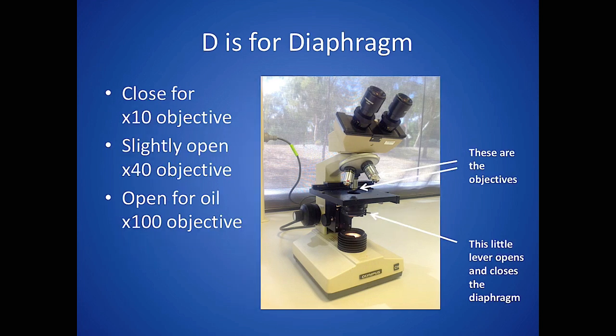D is for diaphragm. Look very carefully at the condenser unit and you can see a tiny lever that can slide to an open and closed position for the diaphragm inside the condenser. When starting off with a 10x objective, have the diaphragm closed. When you move to the 40x objective, have it slightly open, and if you're using an oil objective for oil immersion microscopy, you'll need it all the way open.